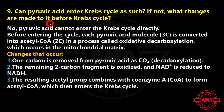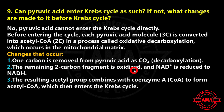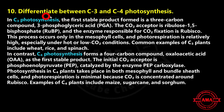Next: can pyruvic acid enter the Krebs cycle as such? If not, what changes are made to it before the Krebs cycle? No, pyruvic acid cannot enter the Krebs cycle directly. Each pyruvic acid molecule is first converted into acetyl coenzyme A in a process called oxidative decarboxylation, which occurs in the mitochondrial matrix. One carbon is removed as carbon dioxide; the remaining two-carbon fragment is oxidized and NAD+ is reduced to NADH. The resulting acetyl group combines with coenzyme A to form acetyl coenzyme A, which then enters the Krebs cycle.